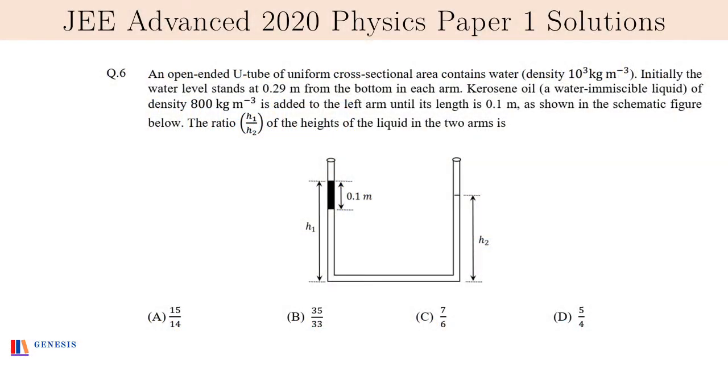Hi there, welcome to JEE Advanced 2020 solutions by Genesis. This is paper 1, section 1, question number 6. This is the question and if you haven't seen the paper, I suggest you pause the video and read the question.